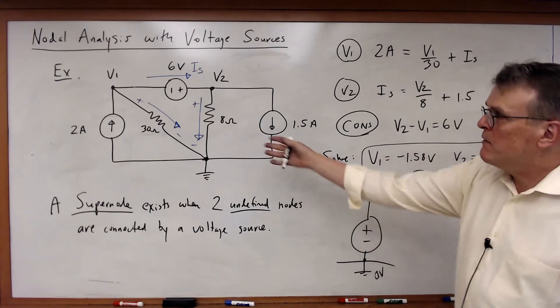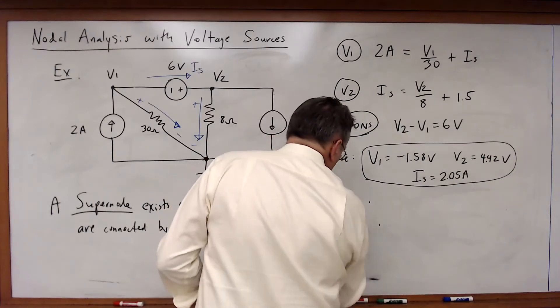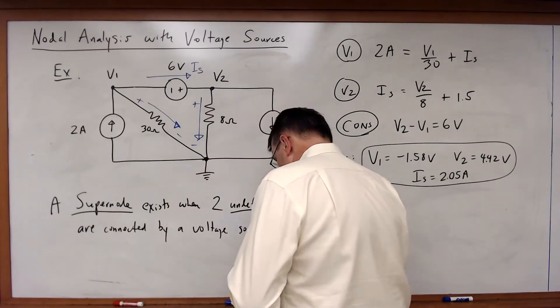That's zero volts. It's a known value. But if they're both unknown, then we've got a supernode. And in fact, that is the situation we have right here.